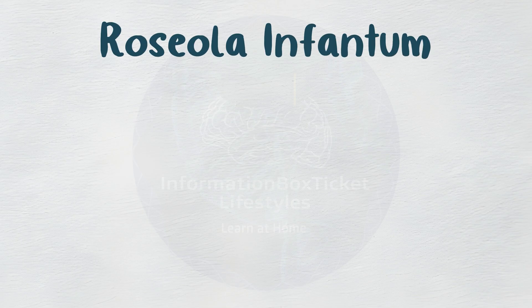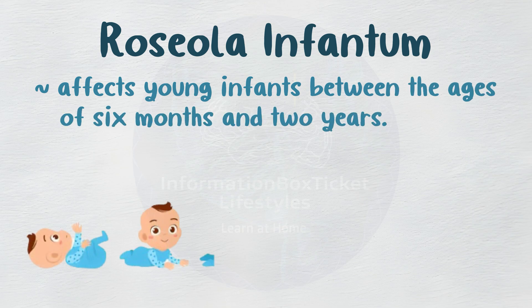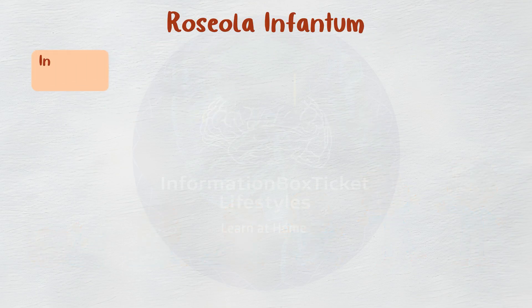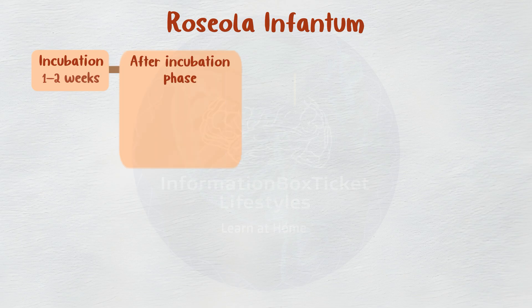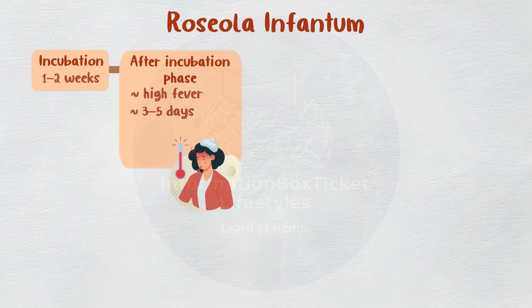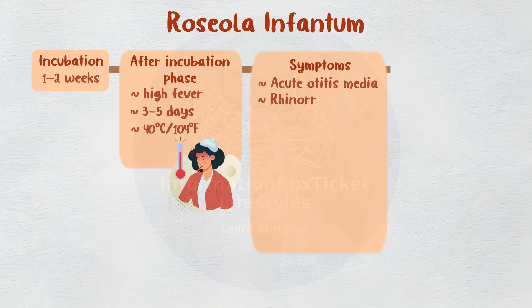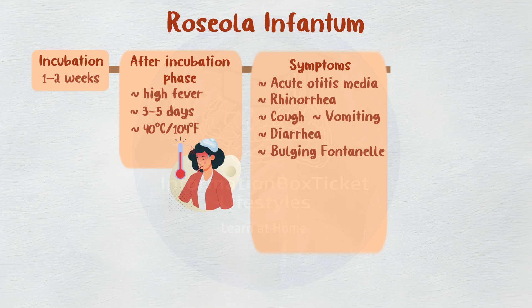The majority of the time, HHV-6 causes roseola infantum, a disease that often affects young infants between the ages of 6 months and 2 years. The illness takes 1 to 2 weeks to fully develop. Following the incubation phase, it often manifests as a high fever lasting 3 to 5 days, with a temperature that can reach above 40°C (104°F), acute otitis media, rhinorrhea, cough, vomiting, and diarrhea.